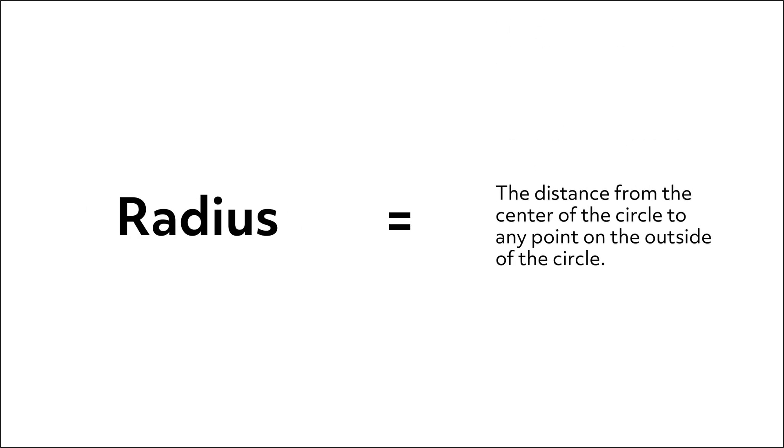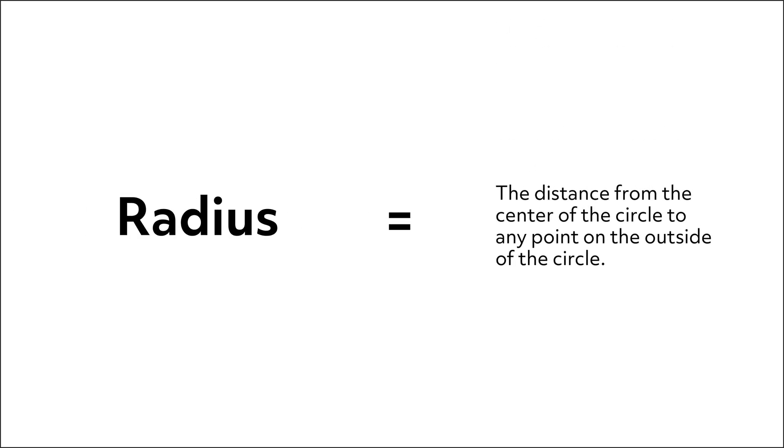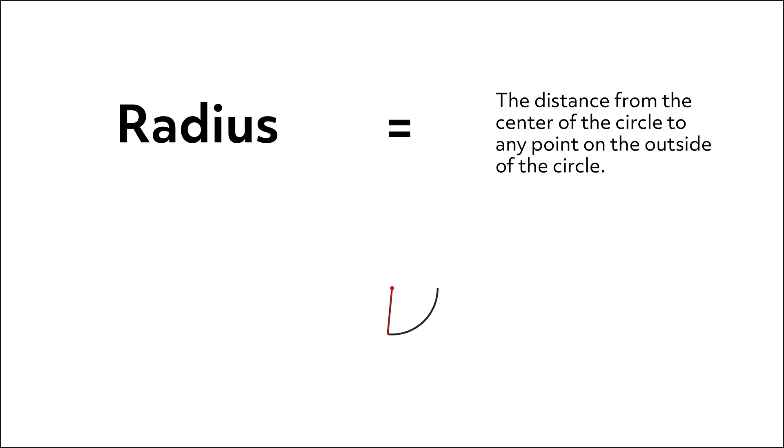First, we need to define the radius, which is the r in our two formulas. The radius is the distance from the center of the circle to any point on the outside of the circle. If we were drawing a circle using a string tied to a pencil, the radius would be the length of the string.